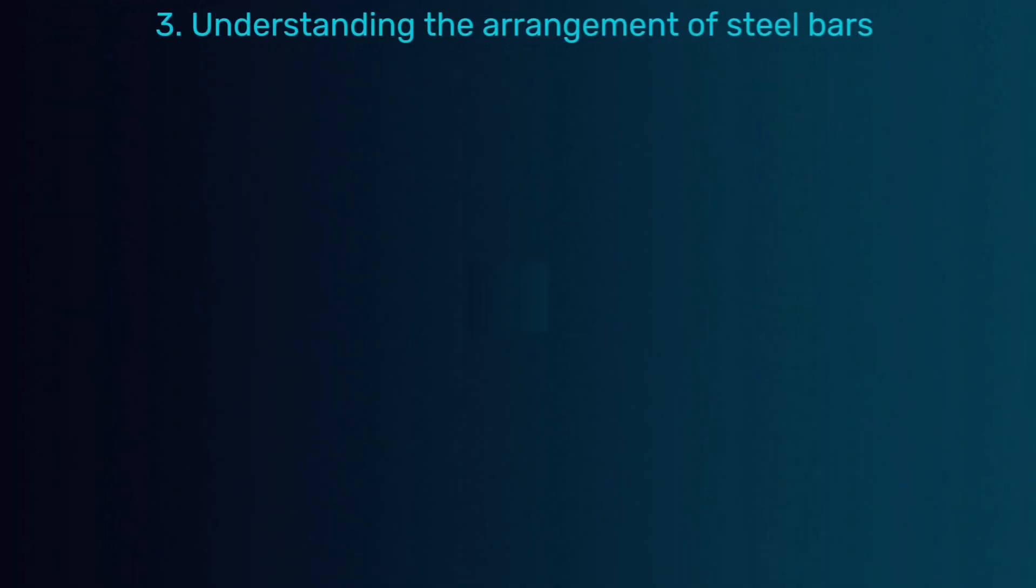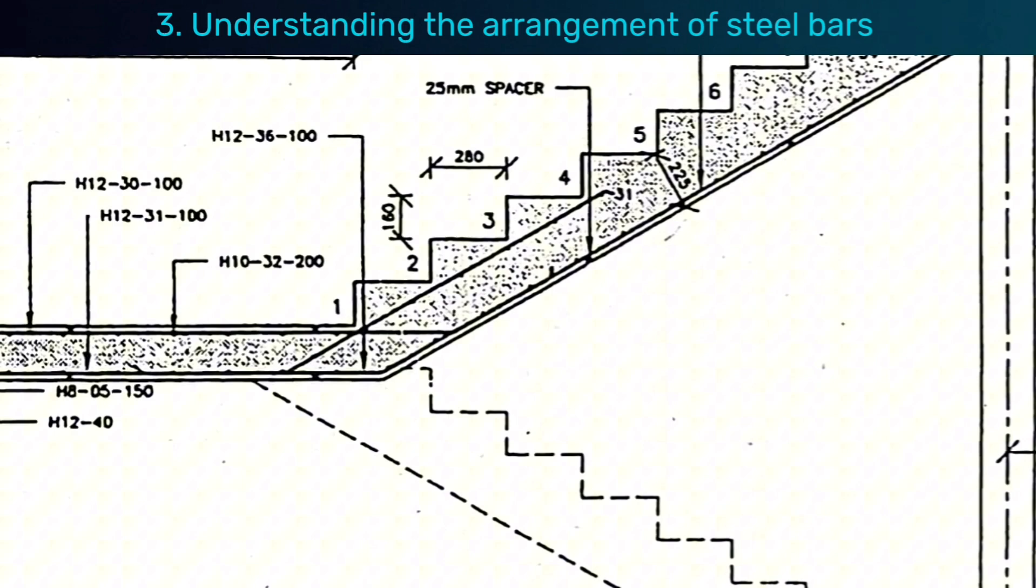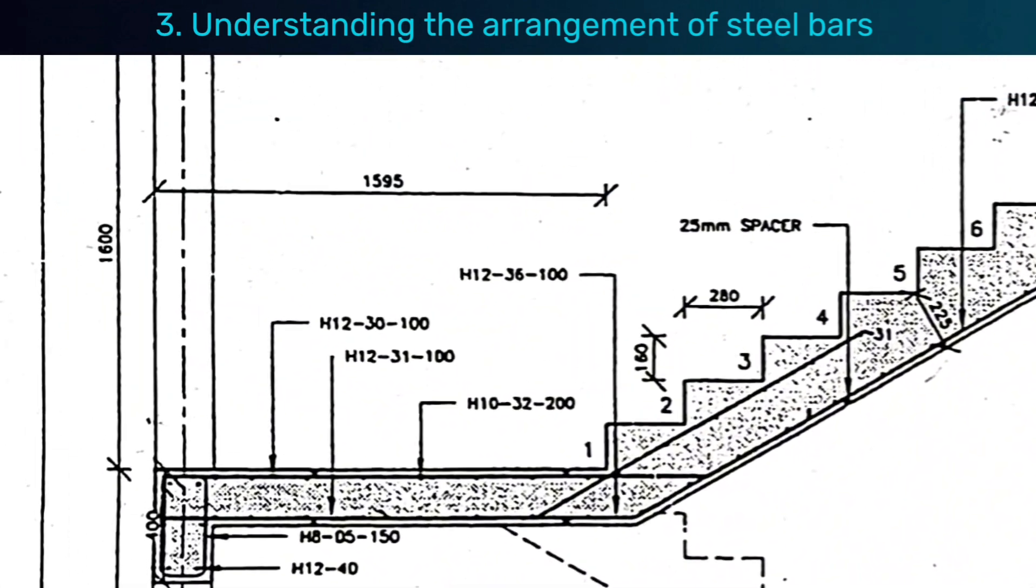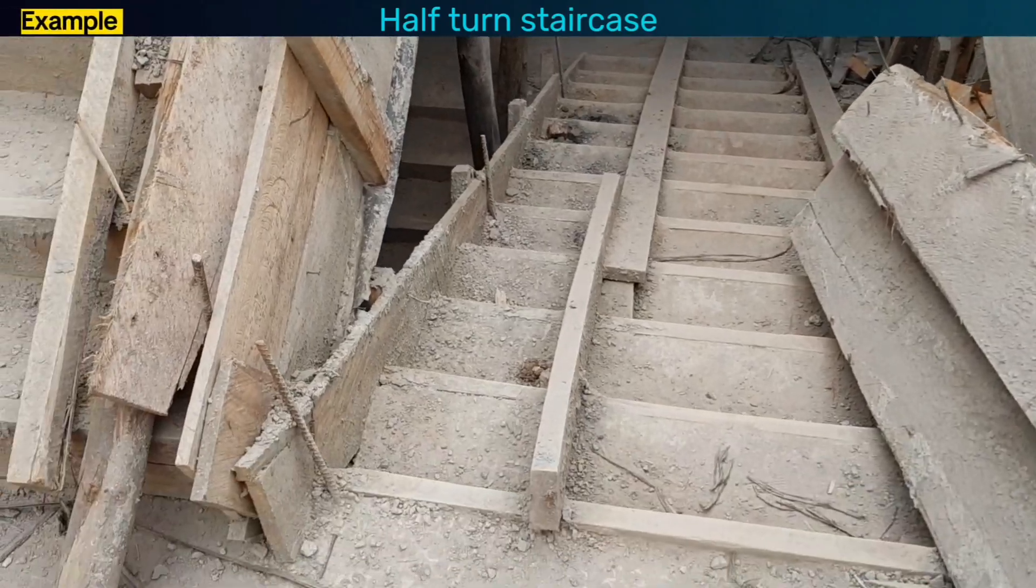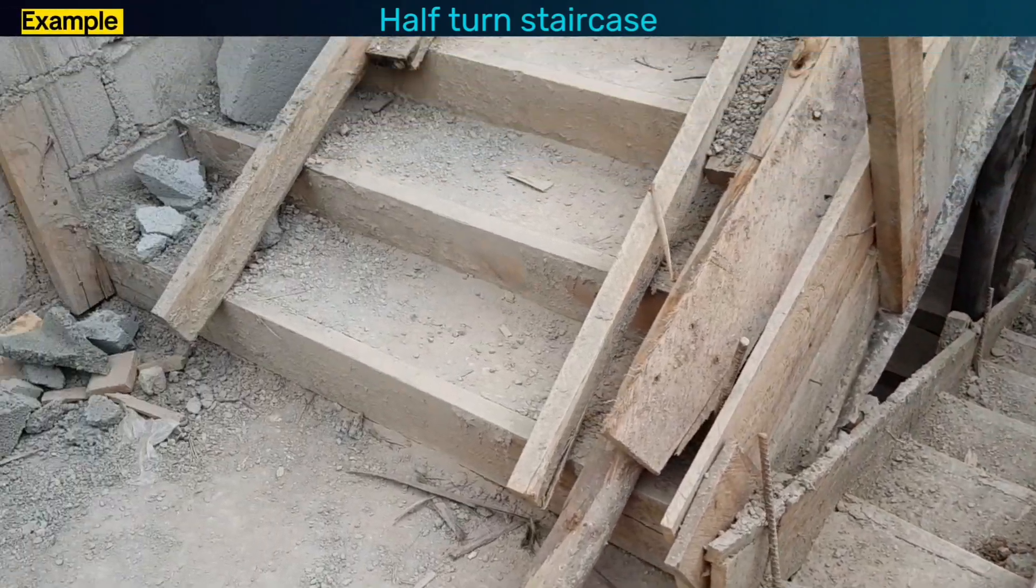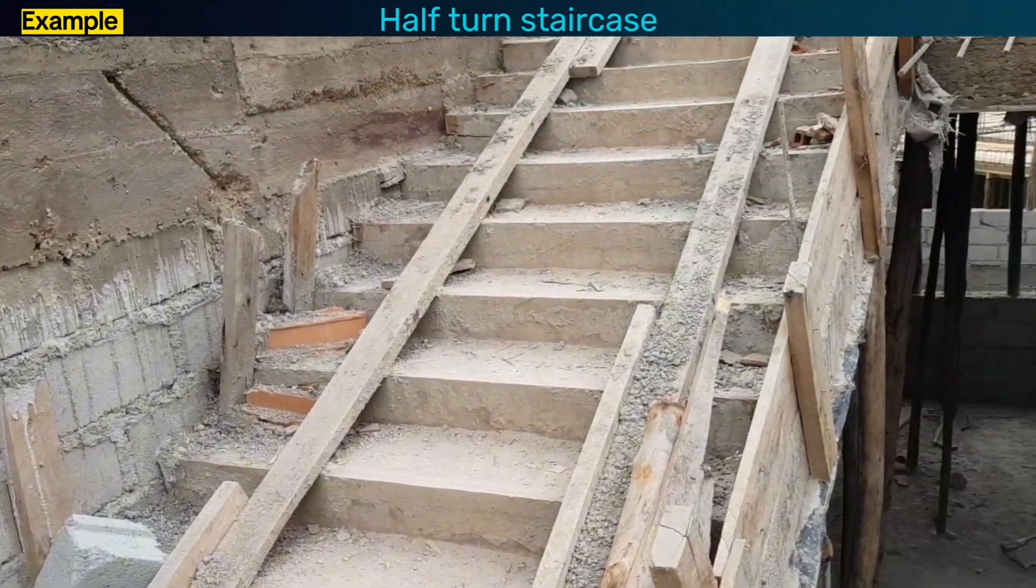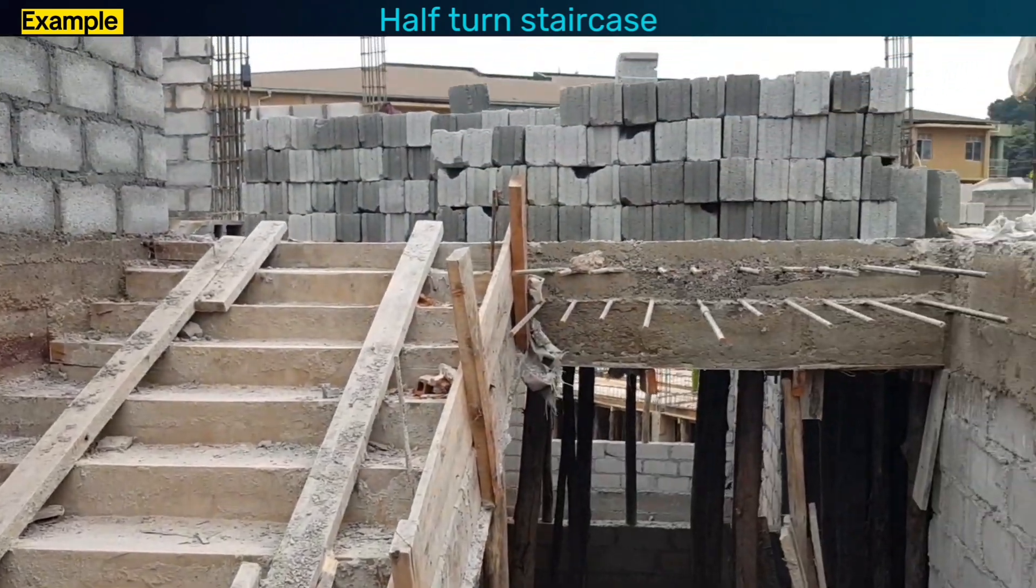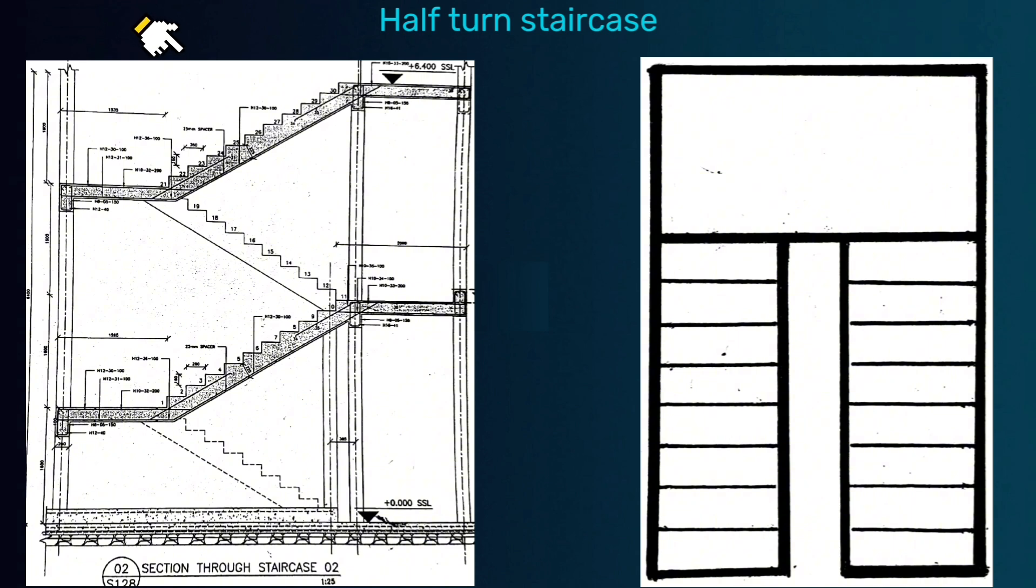Step 3 is understanding the arrangement and how steel bars are fixed in a staircase. Here's what I mean. Let's look at an example of a half-turn staircase. The concept also applies to other types of staircases. This is its cross-section or side view and this is its top view.